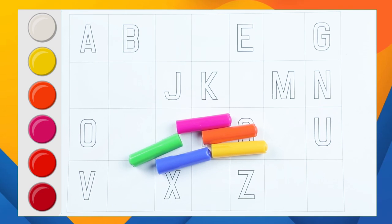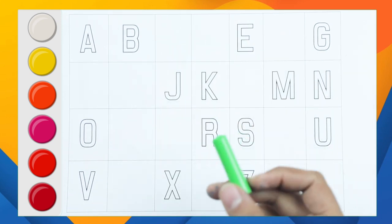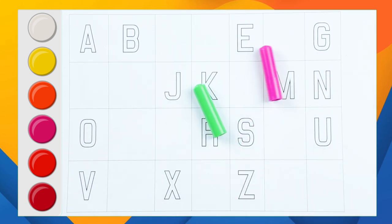Hello friends, today we learn alphabets with filling the blanks A to Z with some colors: green color, pink color, yellow color, orange color, blue color. Let's start.